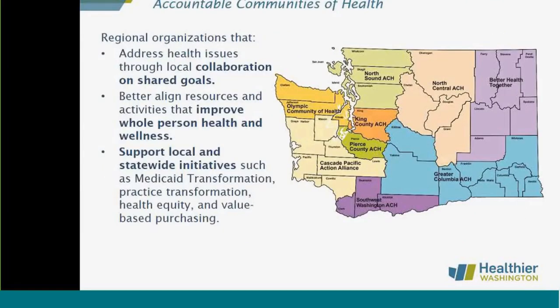The Accountable Communities of Health are a major focus of how we move forward. There are nine ACHs — either single counties or groups of counties — which are regional organizations addressing health issues locally and collaborating with health plans, providers, community members, jails, and schools. Together they examine what resources the state, counties, and other players are bringing to the table, and how to align those resources to improve the health of members.